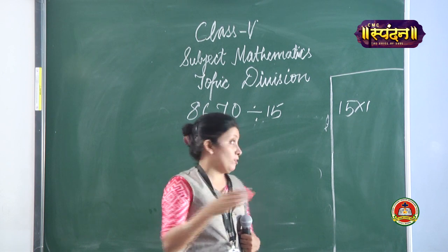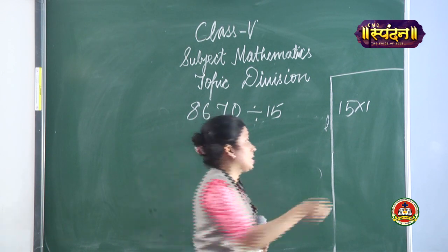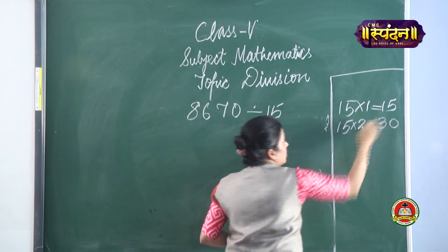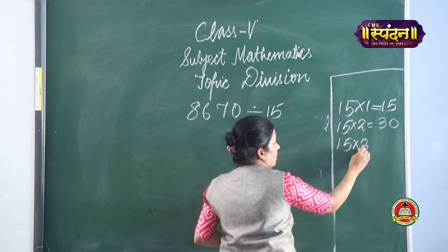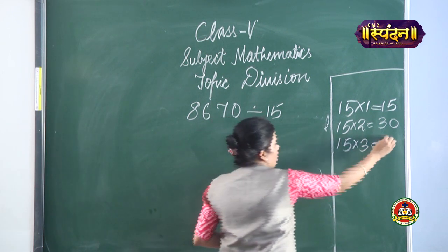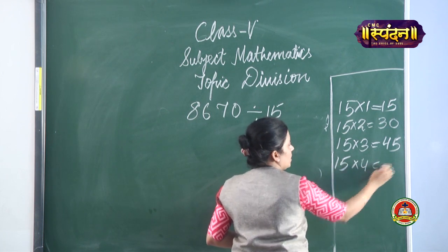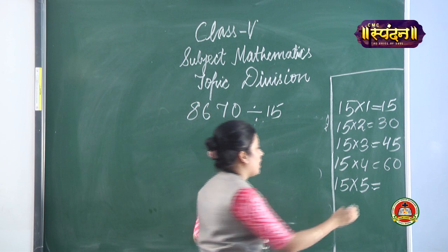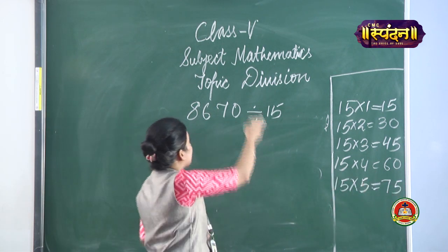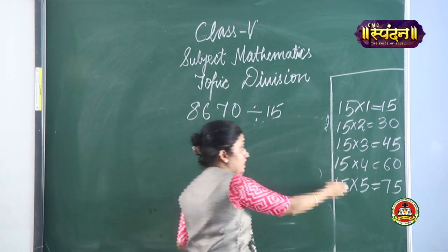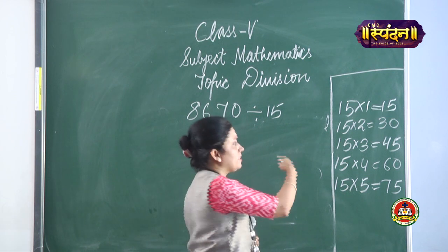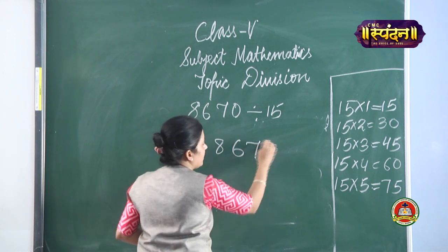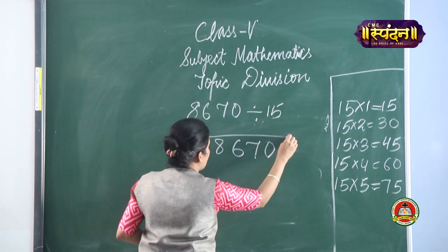Let us write the table of 15: 15 ones are 15, 15 twos are 30, 15 threes are 45, 15 fours are 60, 15 fives are 75, 15 sixes are 90. Now let us write our problem clearly: 8670 divided by 15.